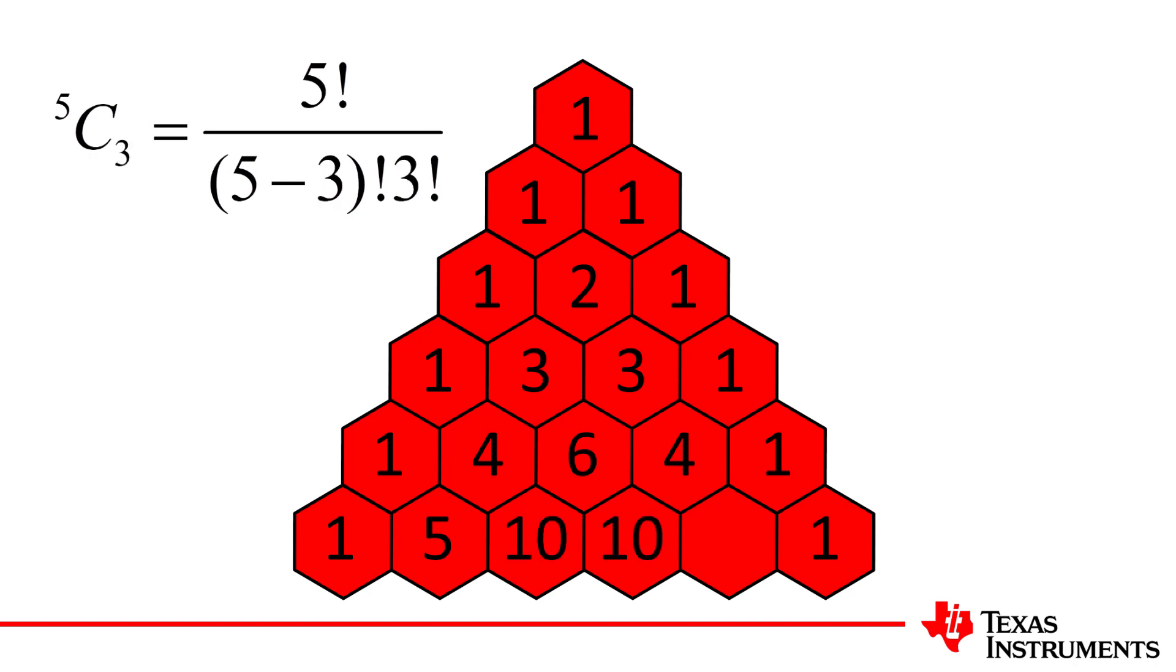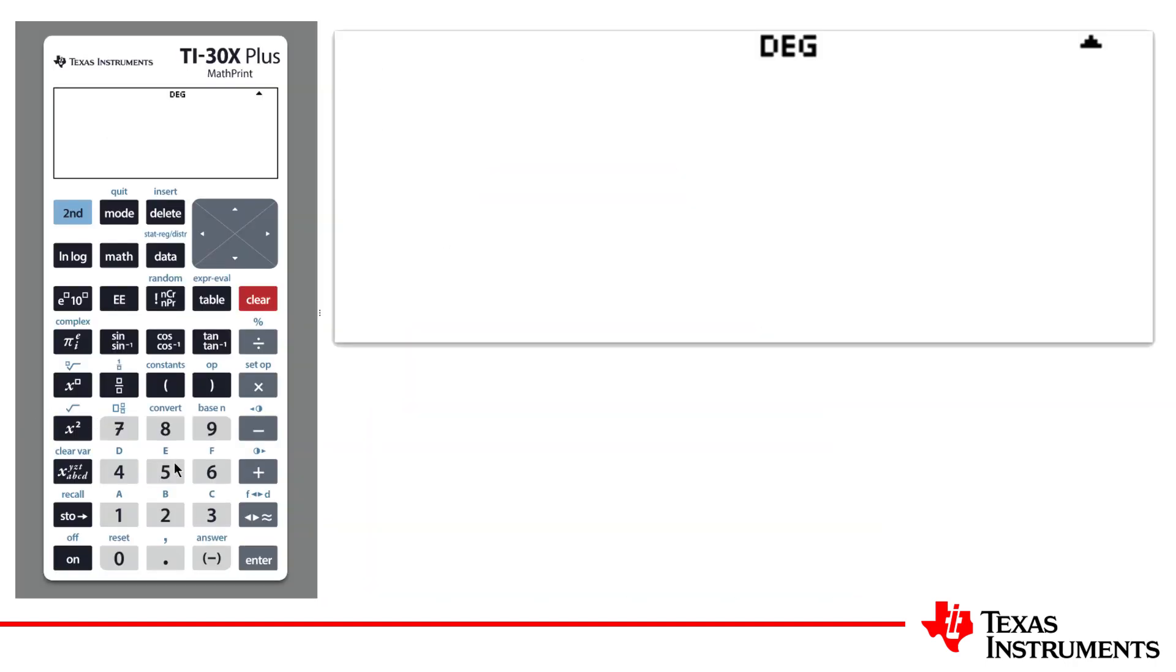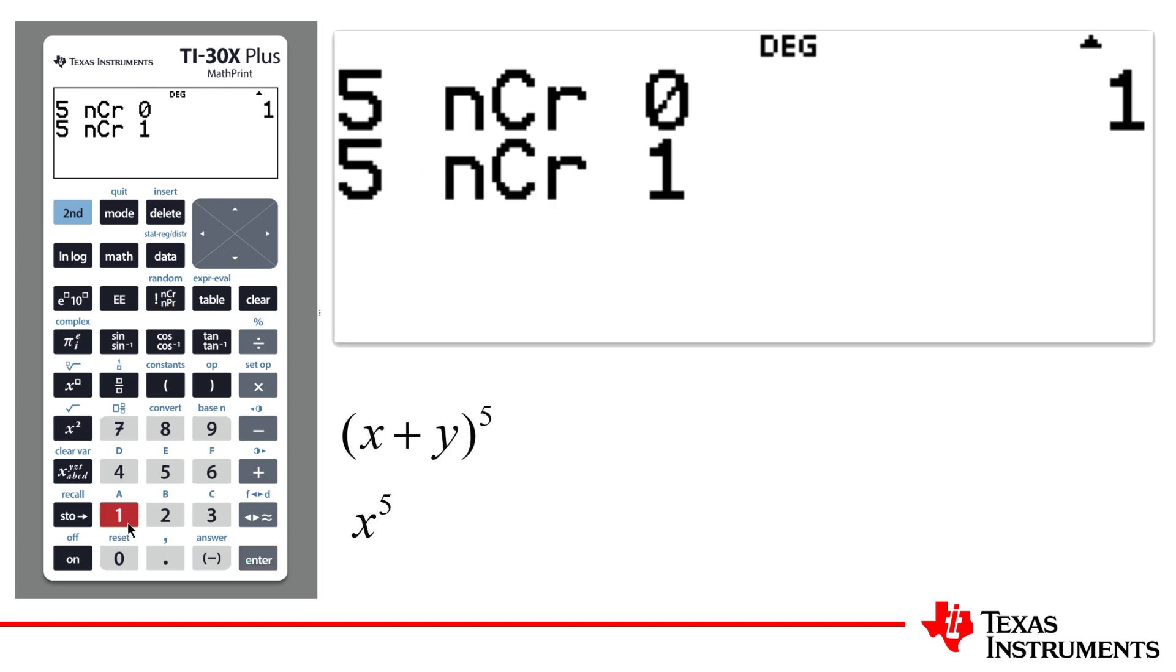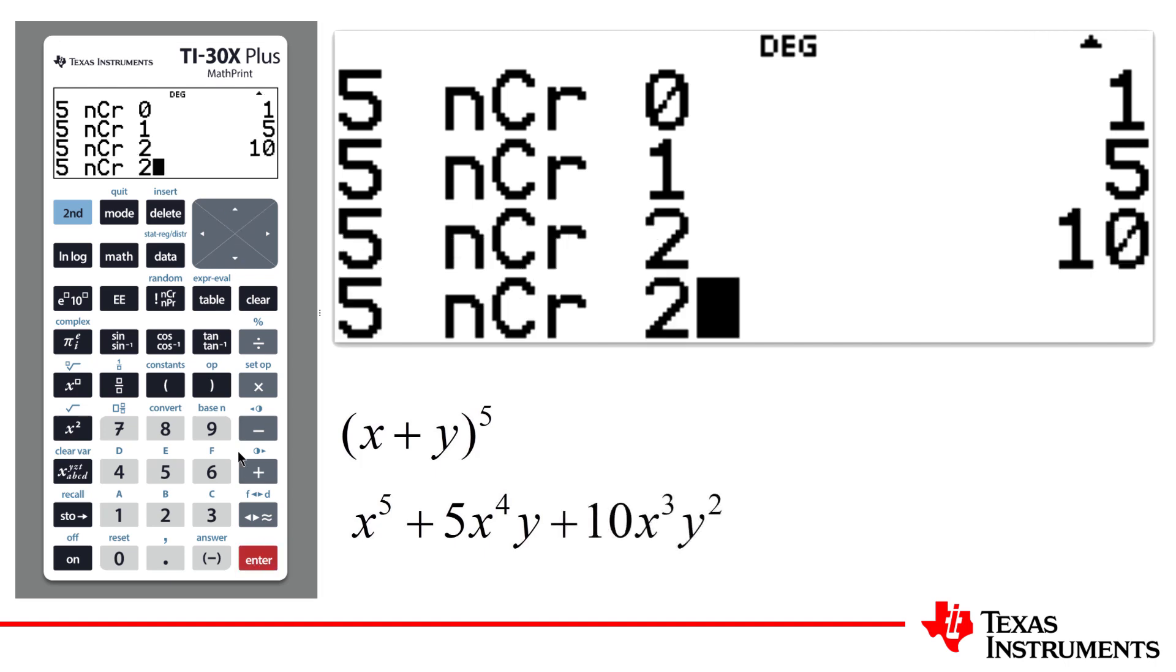The Combinatorics command is available on the TI-30X Plus MathPrint Calculator. Tap the factorial key once, and then a second time to access Combinatorics. The command can be used to calculate any coefficient in the general expansion of x plus y to the n, but it is also possible to calculate all of them at once.